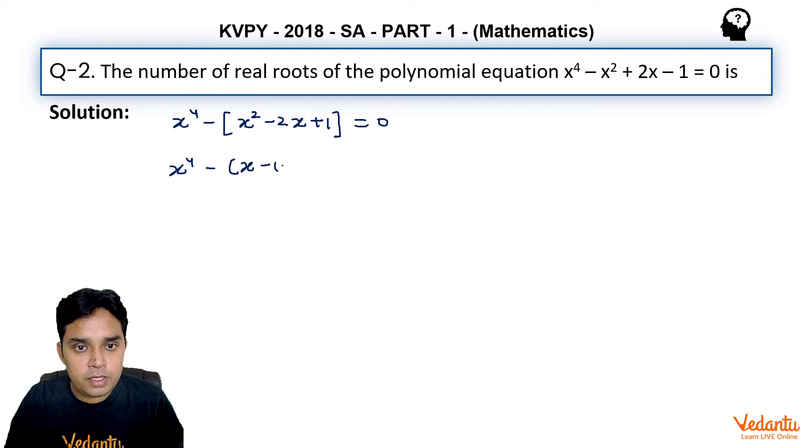So it will be (x^2 + x - 1) in one bracket, and in another bracket it would be (x^2 - x + 1) = 0. Now if we solve these quadratics separately...